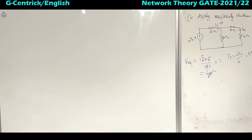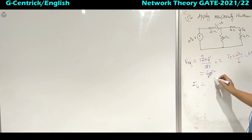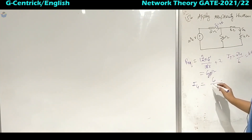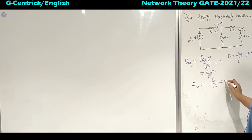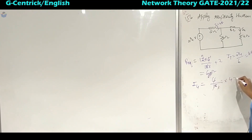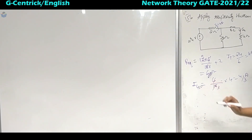Using the current division rule to find I4: it is 6 divided by 18 into 4, which comes out to be 4 by 3 amperes. So this is the current across the 4 ohm resistor.